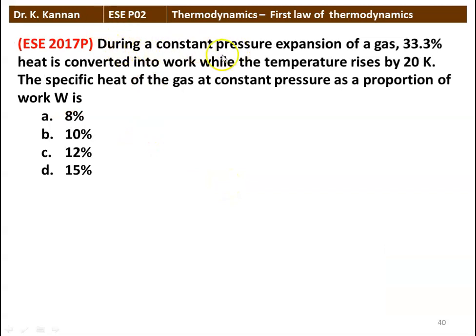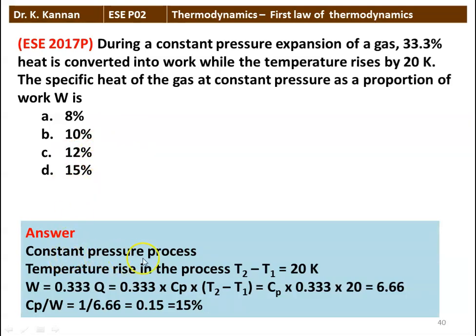Next question: during a constant pressure expansion of gas, 33.3% of heat is converted into work while the temperature rises by 20 K. The specific heat at constant pressure as a proportion of work is — 8%, 10%, 12%, 15%? Work = 0.33 × Cp × ΔT = 0.33 × Cp × 20 = 6.66 Cp. So Cp/W = 1/6.66 = 0.15, that is 15%. The answer is 15%.